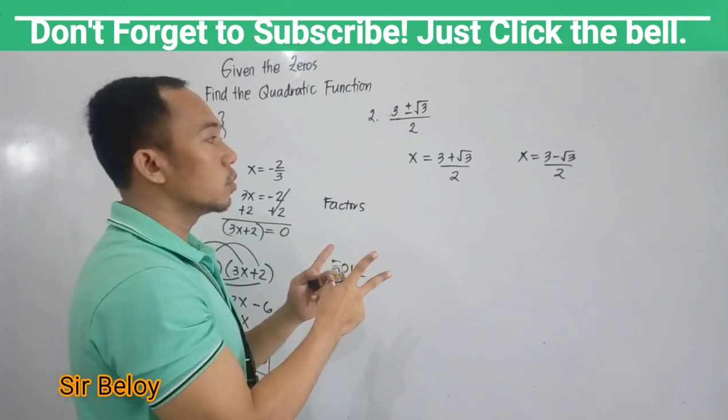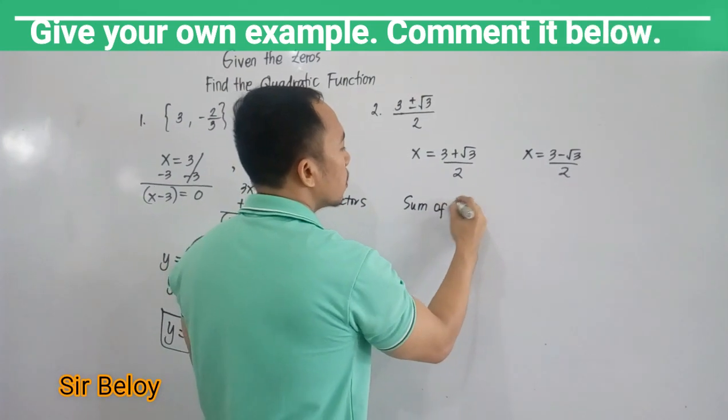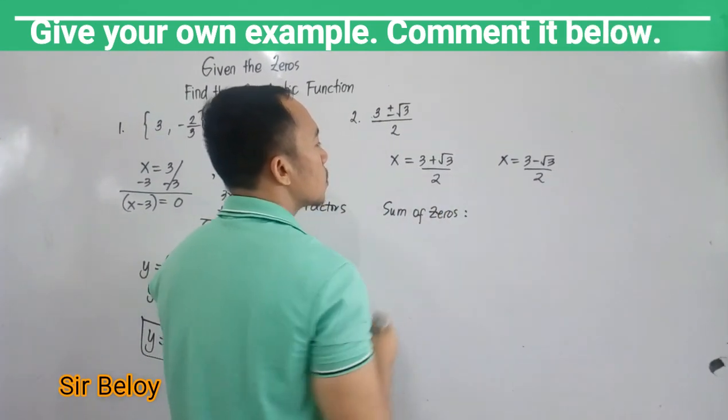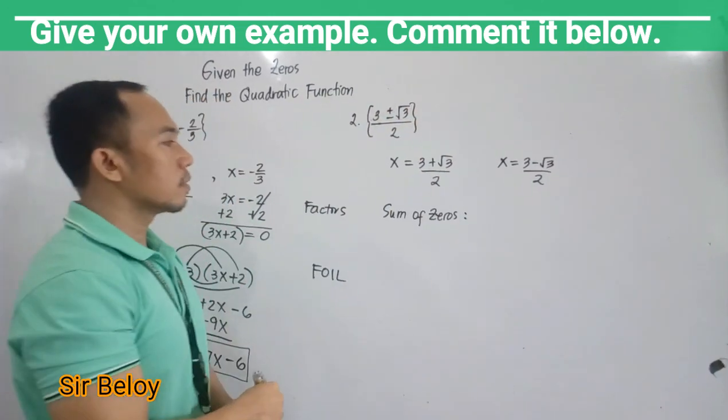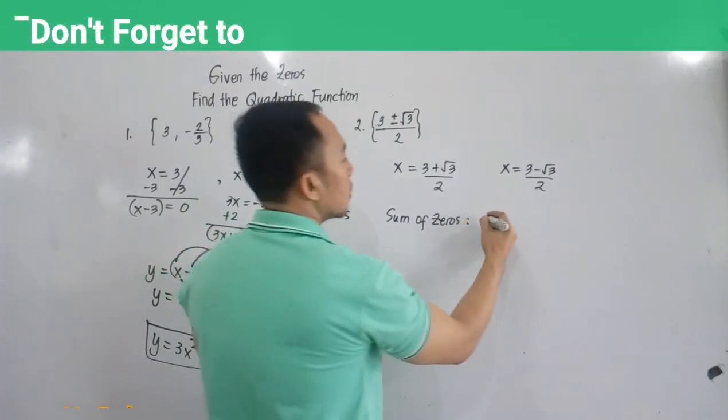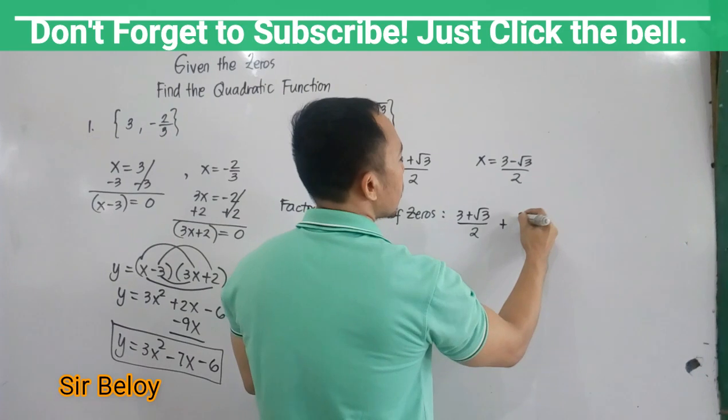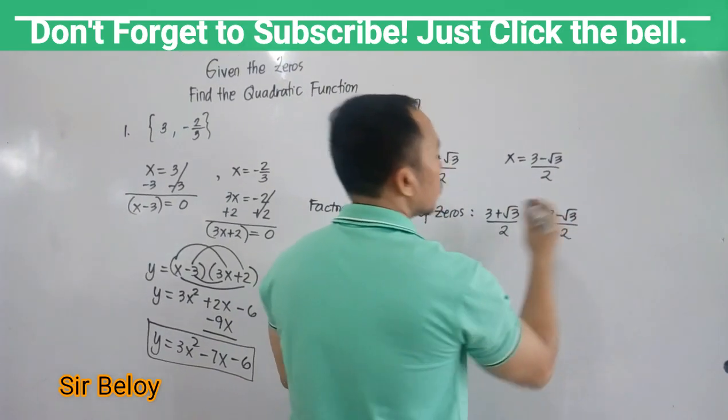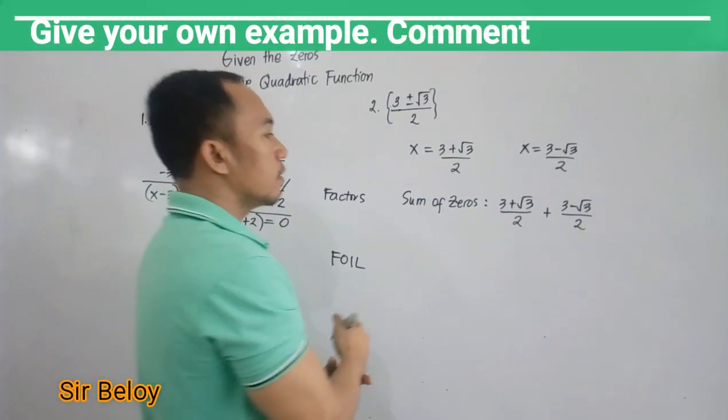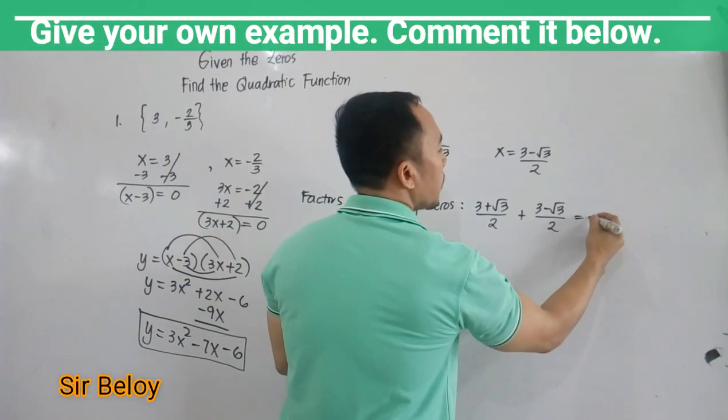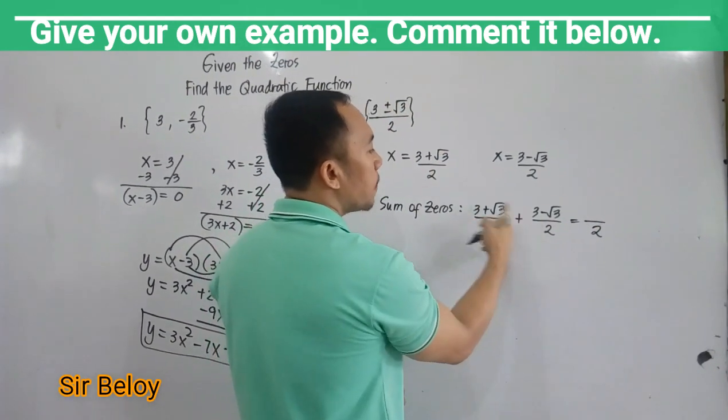And the second zero is (3 minus square root of 3) over 2. Just separate the two. Then, we need to get the sum of zeros. So the sum of the zeros is (3 plus square root of 3 over 2) plus (3 minus square root of 3 over 2). So how are we going to get the sum? First, copy the same denominator which is 2.